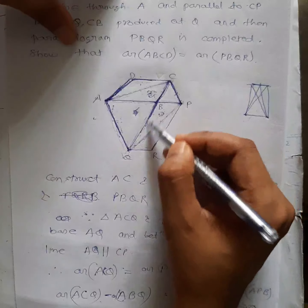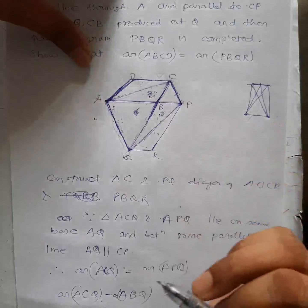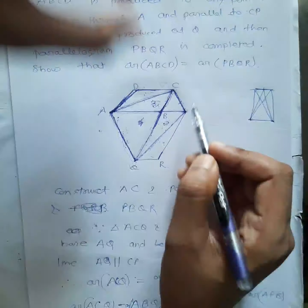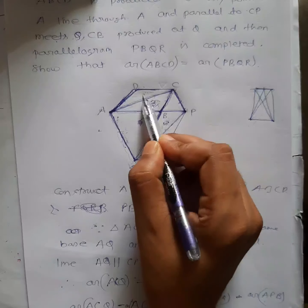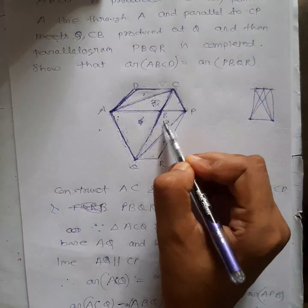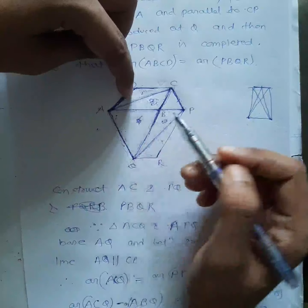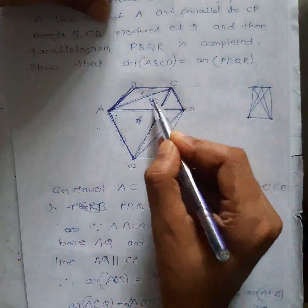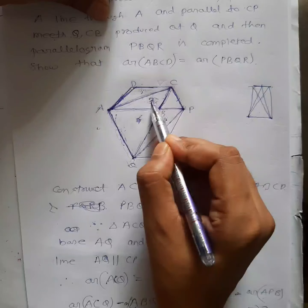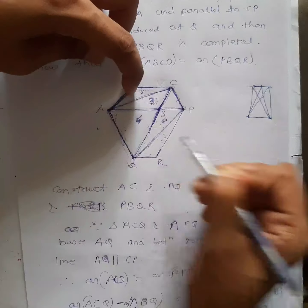Next part is very simple. The diagonal of a parallelogram always bisects its area — it divides the area into two equal halves. So for parallelogram ABCD, the diagonal AC gives: area of ADC equals area of ABC. And for parallelogram PBQR, the diagonal PQ gives: area of PBQ equals area of PQR. If this and this are the same and here this and this are the same, can we say the remaining parts must also be same? Yes — obviously.